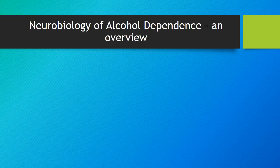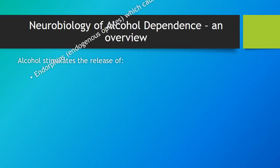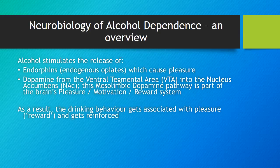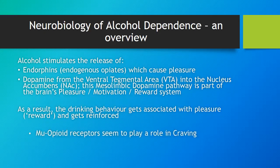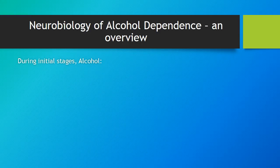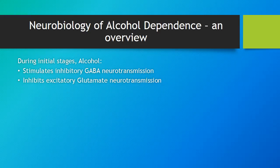We will now look at the neurobiology of alcohol dependence. Alcohol stimulates the release of endorphins and also stimulates the release of dopamine from the ventral tegmental area into the nucleus accumbens. This mesolimbic dopamine pathway is part of the brain's pleasure-motivation-reward system. As a result, the drinking behavior gets associated with pleasure and gets reinforced. Mu opioid receptors appear to play a role in craving.